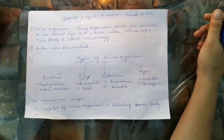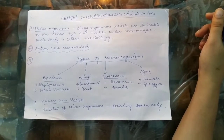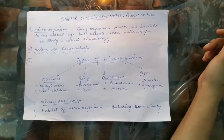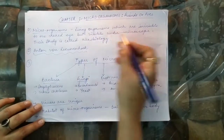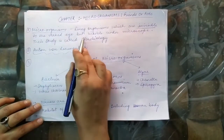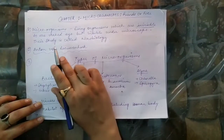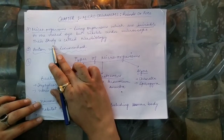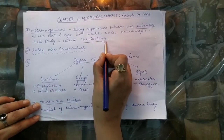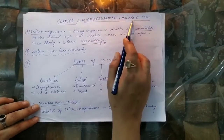Good afternoon children. We are going to start with the chapter 'Microorganism: Friends or Foes' today. Microorganisms means the living organisms which are invisible to the naked eye but visible under the microscope. The study of microorganisms is called microbiology.